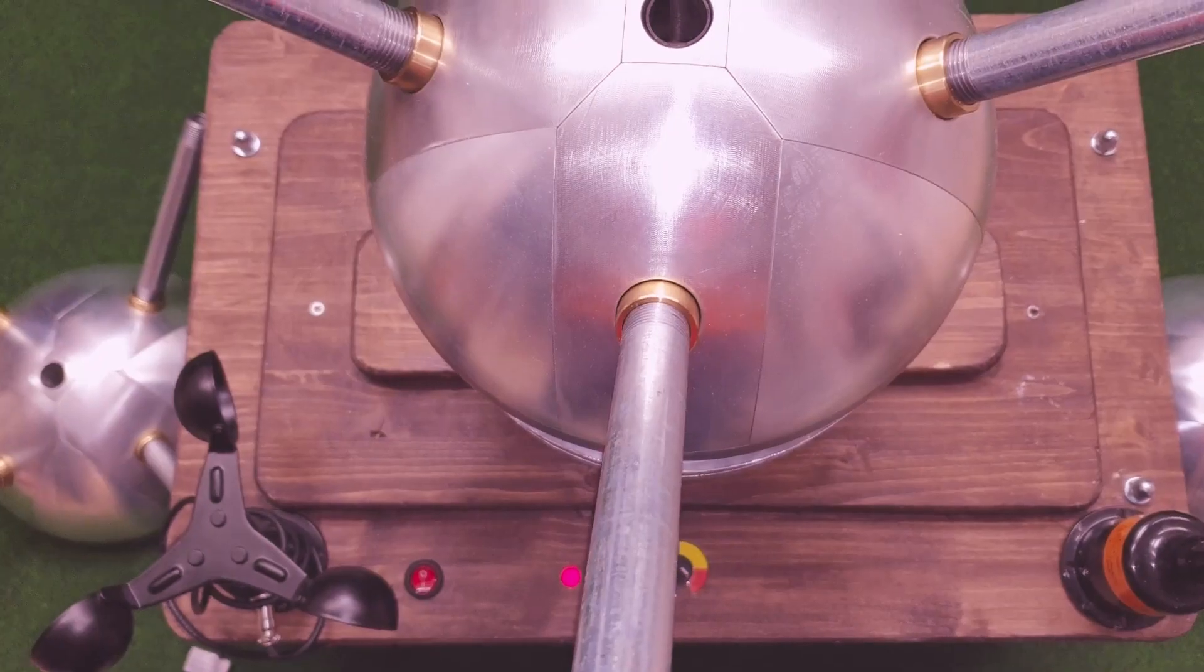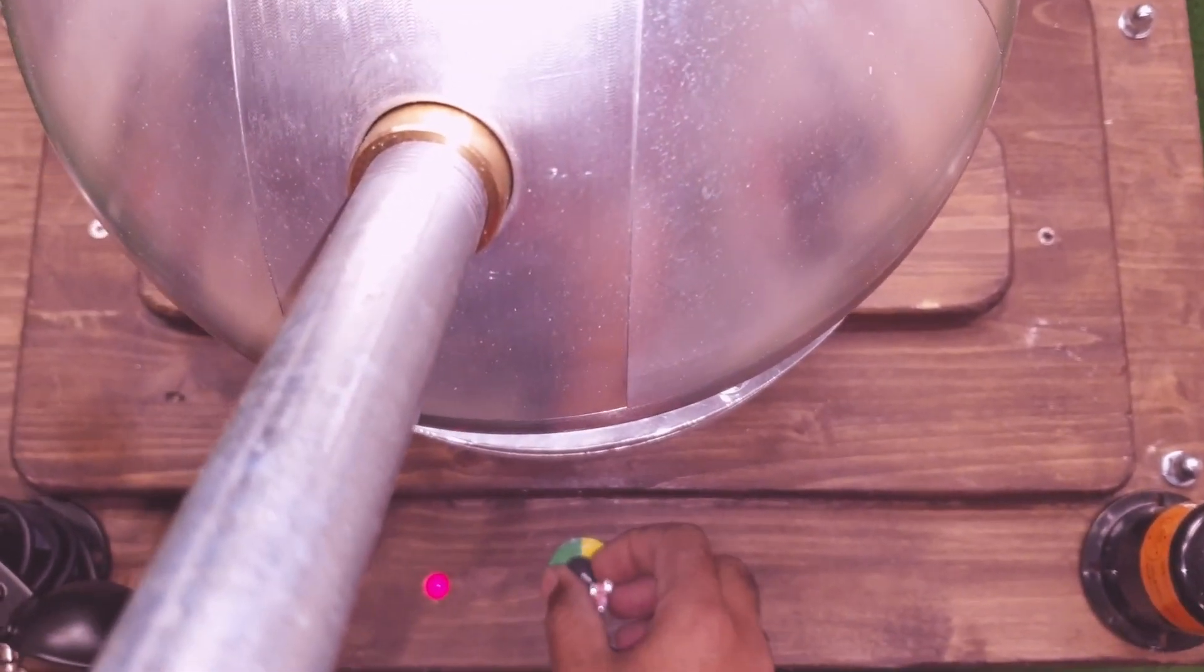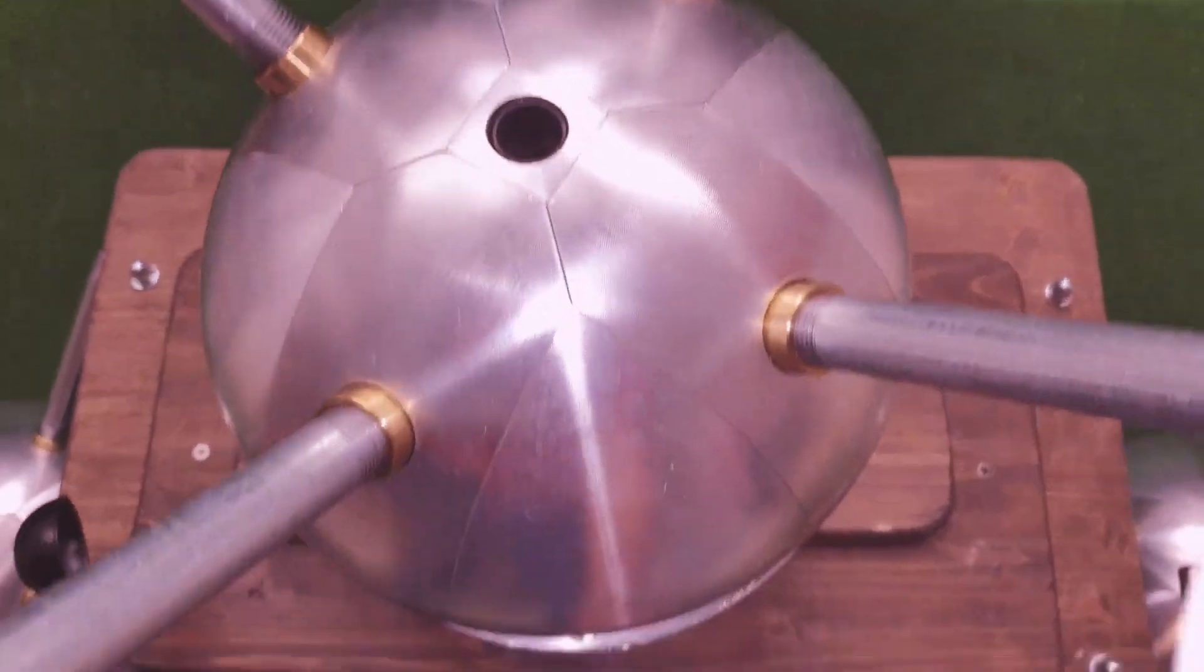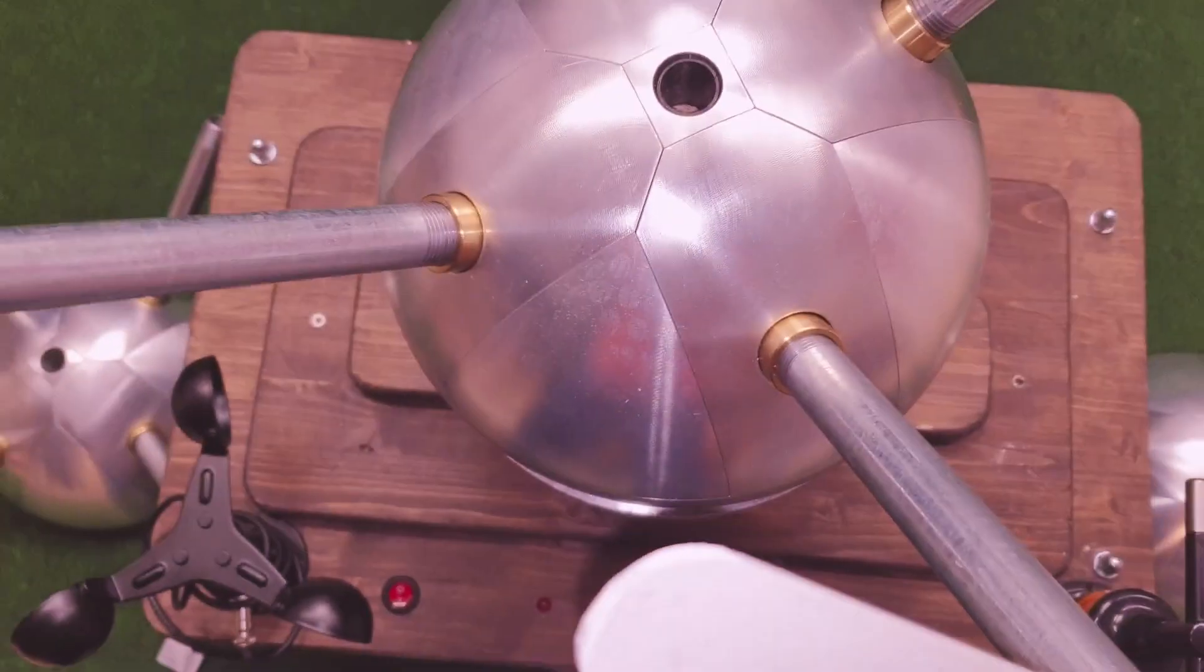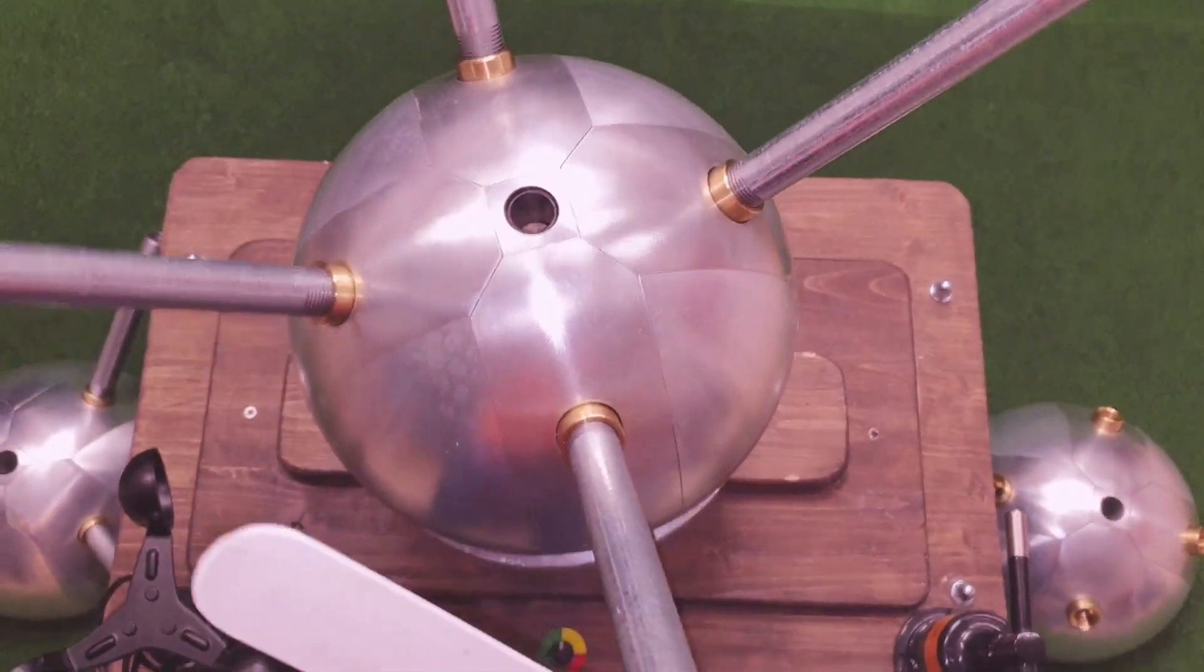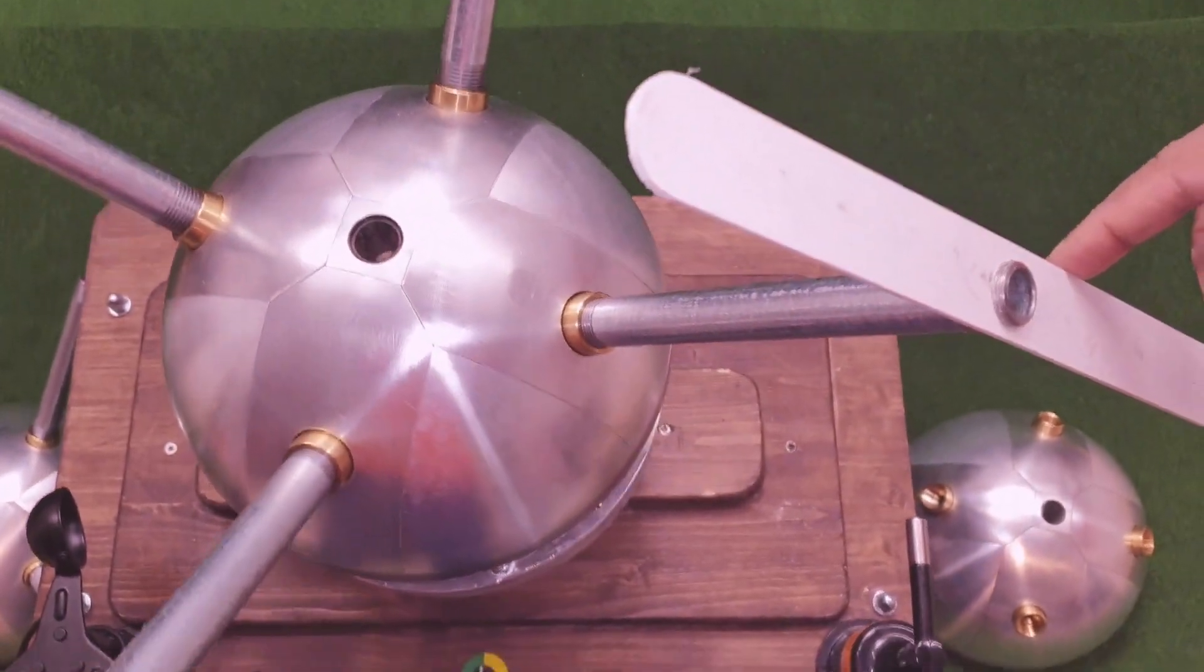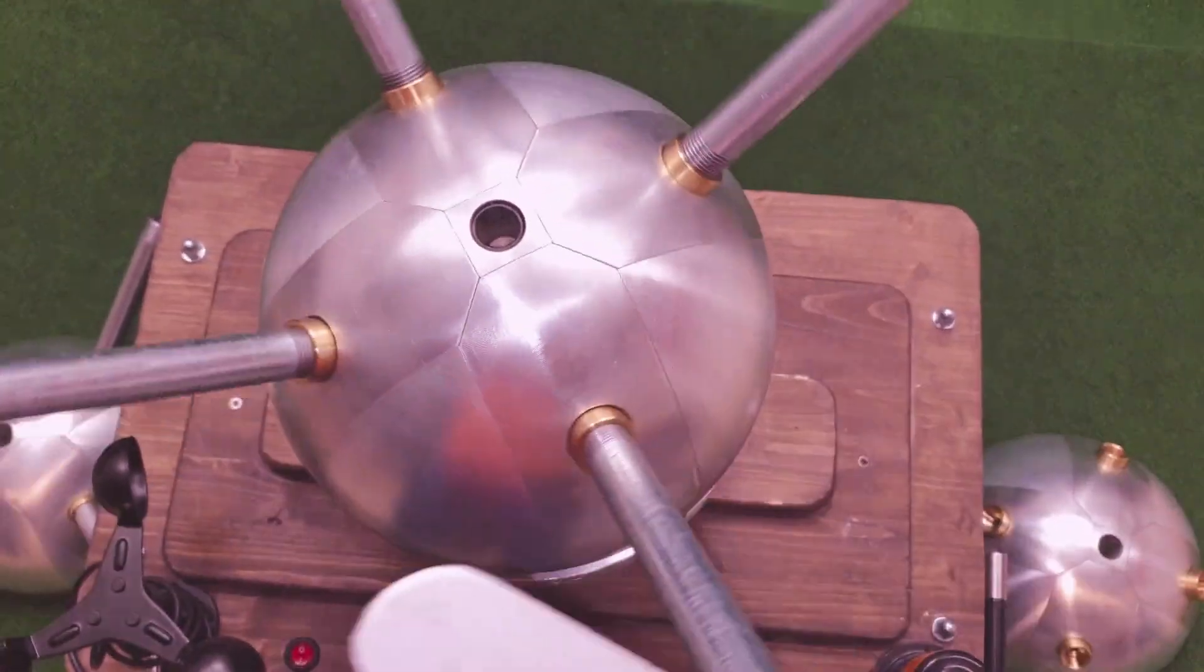When the wind speed reduces, then anti-feathering will happen and it comes back to the green zone. When the wind comes, it starts rotating normally.